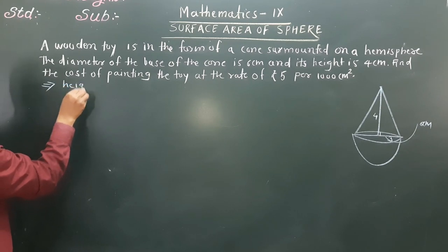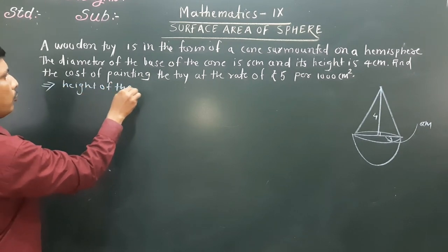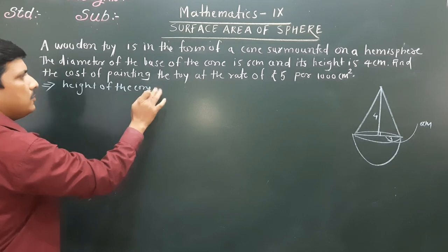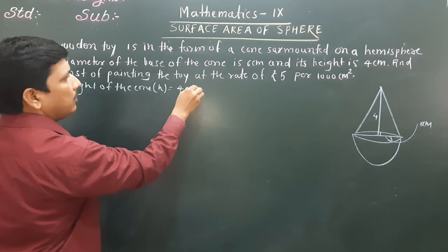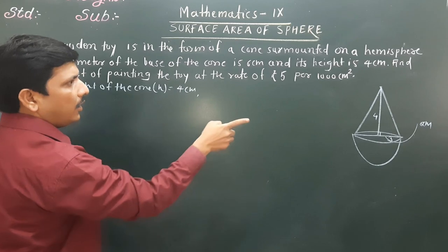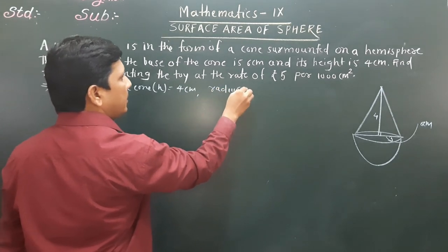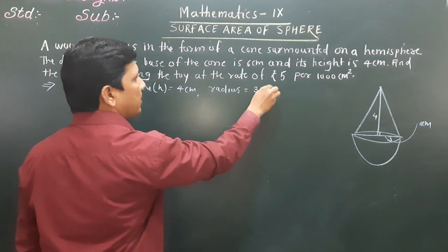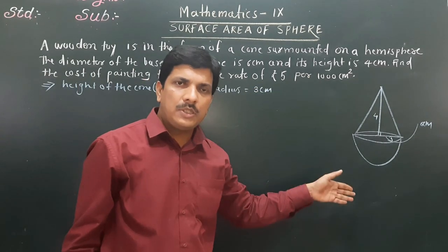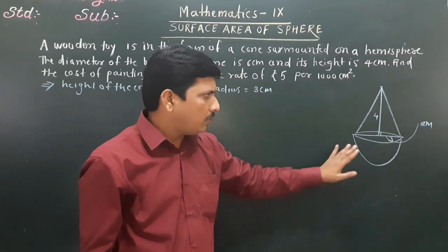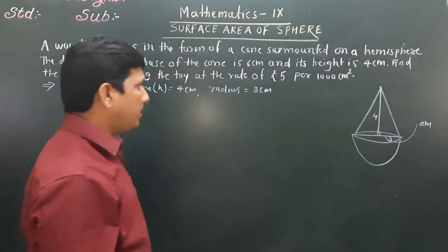Height of the cone h is given as 4 cm. Radius is 3 cm. The radius of the cone and radius of the hemisphere will be the same because the cone is mounted on the hemisphere.